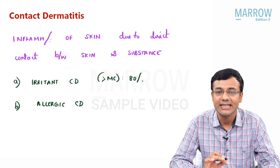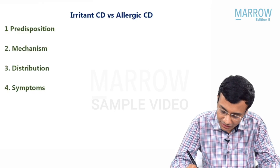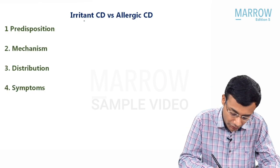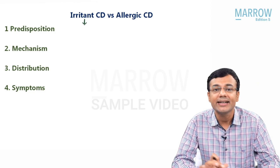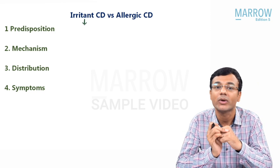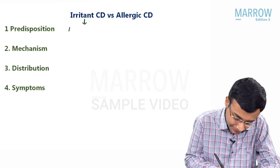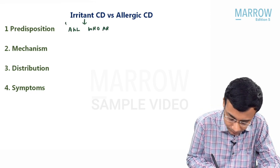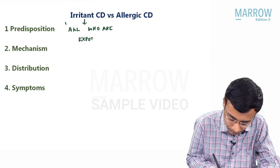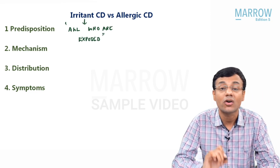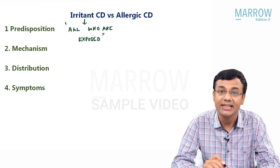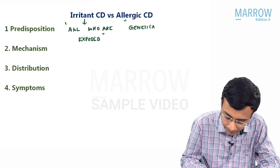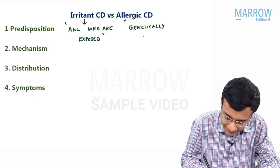Now let's see what are the salient differences between irritant contact dermatitis and allergic contact dermatitis. The first point is in relation to predisposition. Irritant contact dermatitis is going to affect all those people who are exposed to the irritant — it affects all who are exposed. Whereas, allergic contact dermatitis is seen in selected individuals, and that's why it's seen in genetically predisposed people.